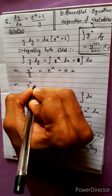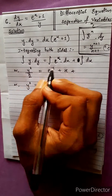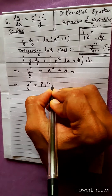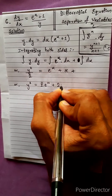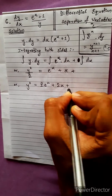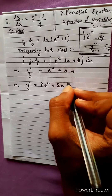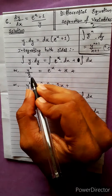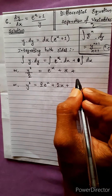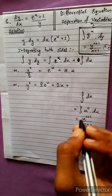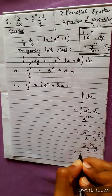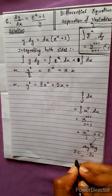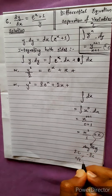y squared equals 2e to the power x plus 2x plus 2c. We have the integration constant, so suppose c is written as 2c. Therefore the answer involves 2c squared minus 2c squared, giving c by 2.